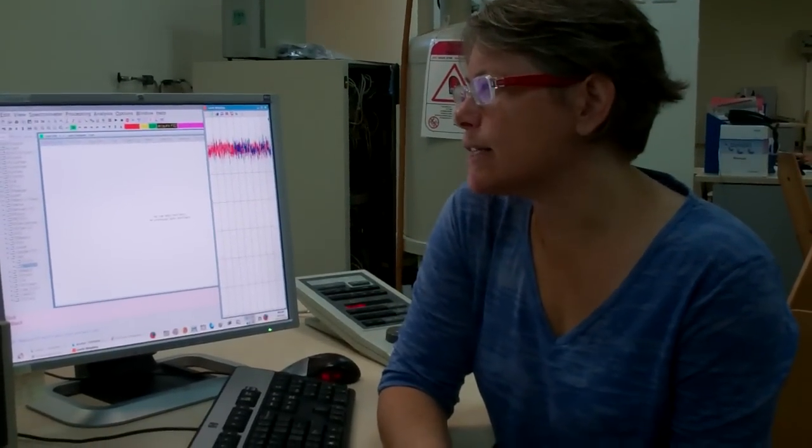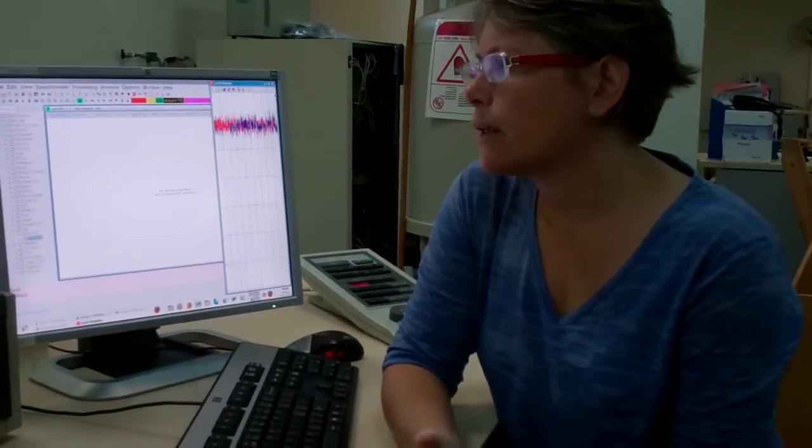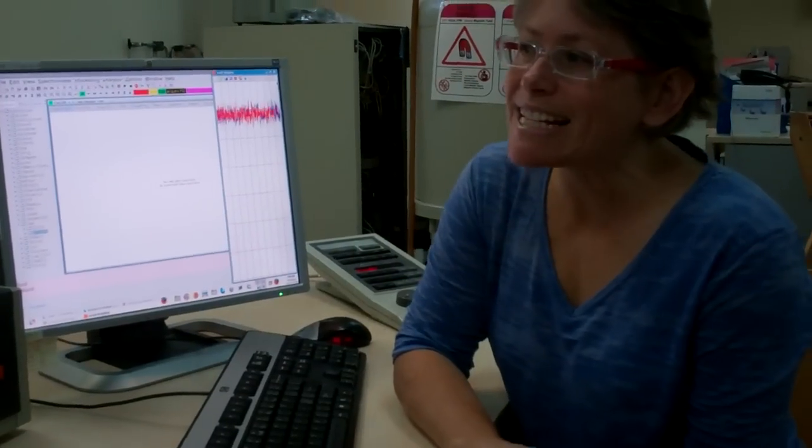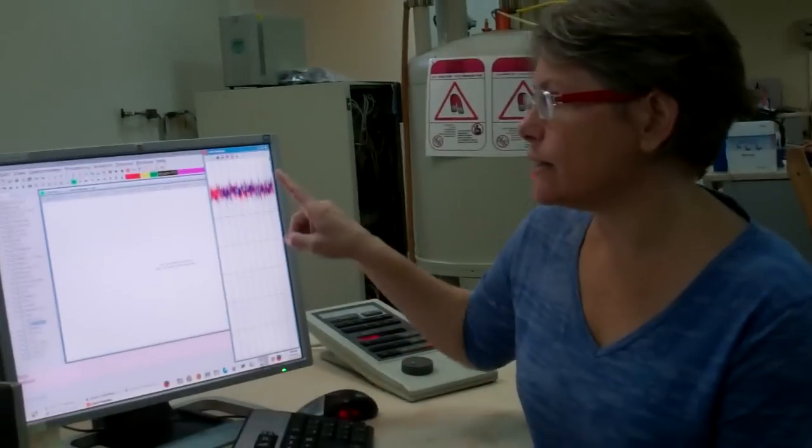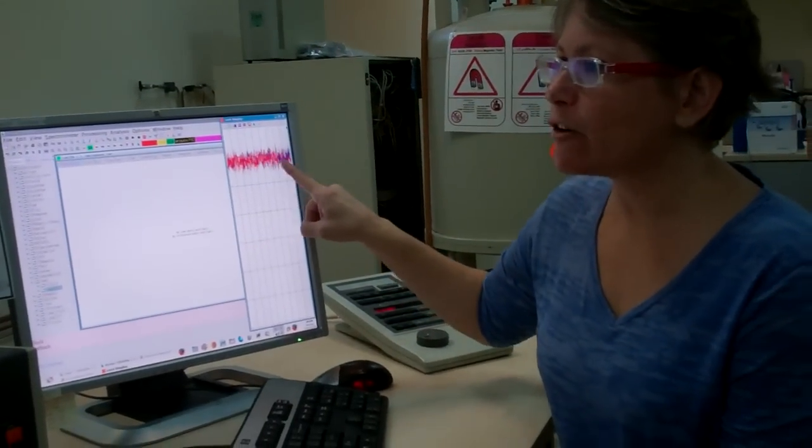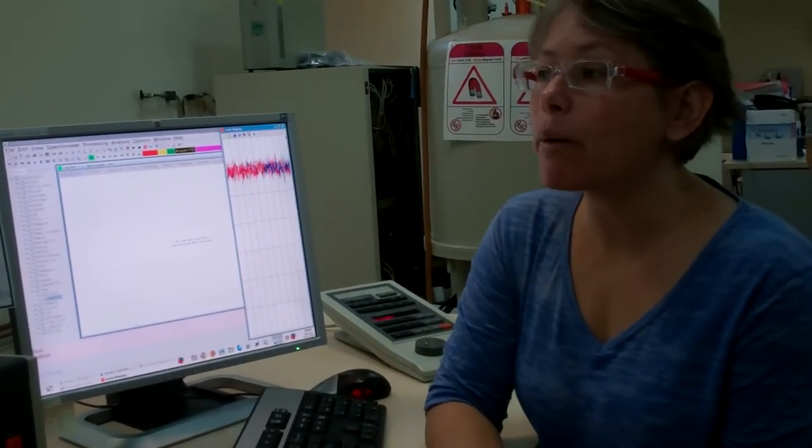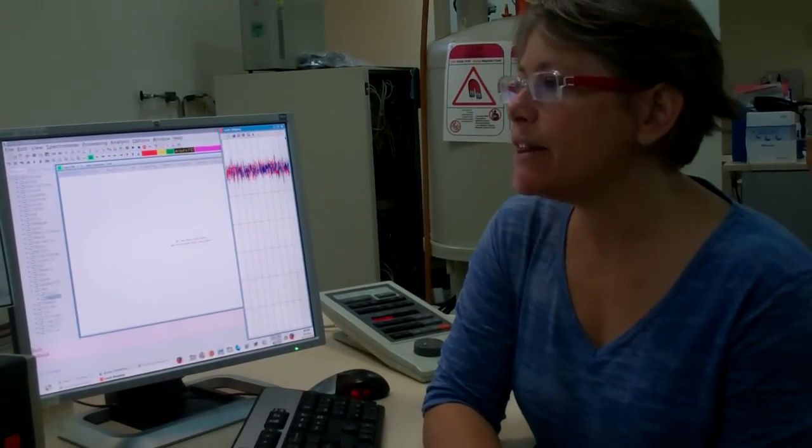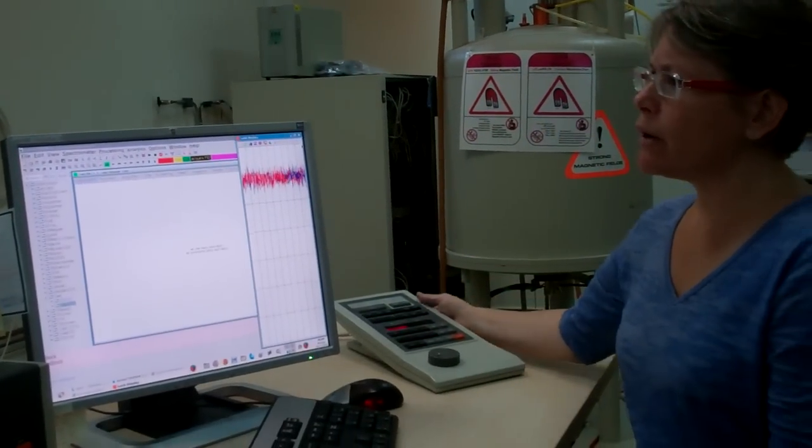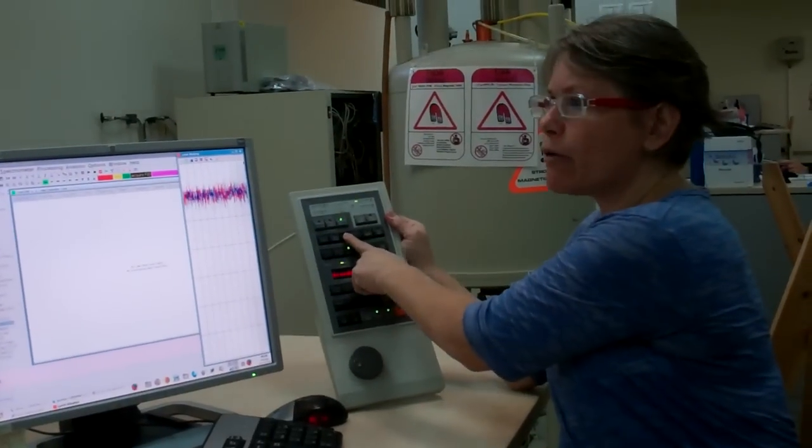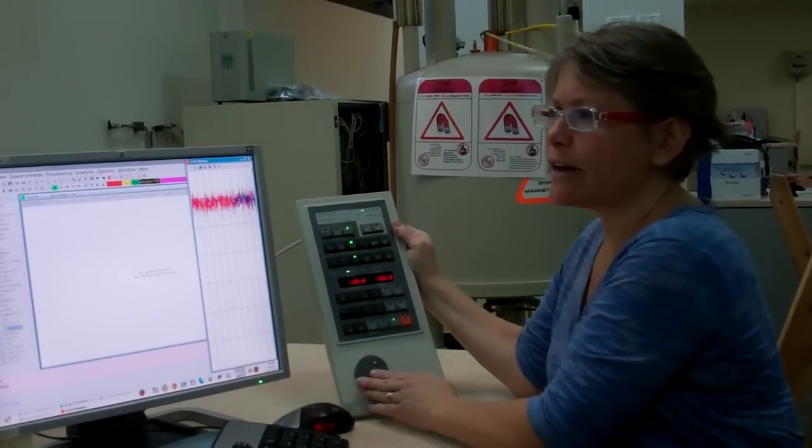Why is the signal intensity constant as a function of time? Because the magnetic field is actively being kept constant as a function of time. If the lock signal is zigzagging diagonally across the lock display, the lock power is too high and the deuterium signal is saturated. Just turn down the lock power by clicking the black lock power button and turning the dial counter-clockwise.